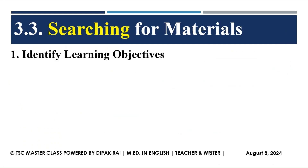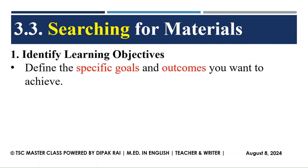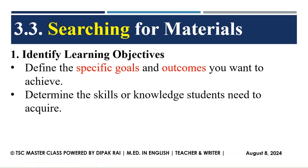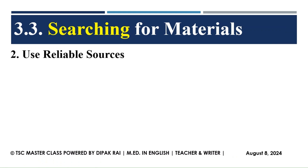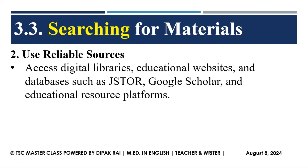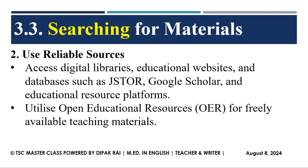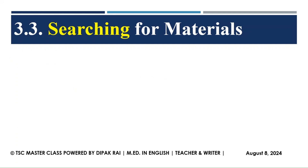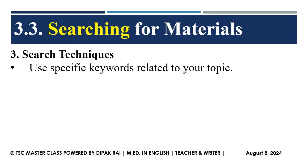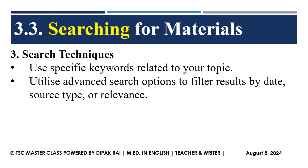Identify learning objectives: Define the specific goals and outcomes you want to achieve. Determine the skills or knowledge students need to acquire. Use reliable sources: Access digital libraries, educational websites, and databases such as JSTOR, Google Scholar, and educational resource platforms. Utilize Open Educational Resources (OER) for freely available teaching materials. Search techniques: Use specific keywords related to your topic. Utilize advanced search options to filter results by date, source type, or relevance.